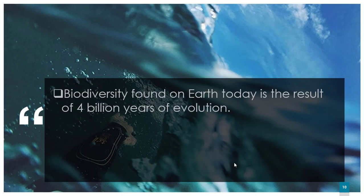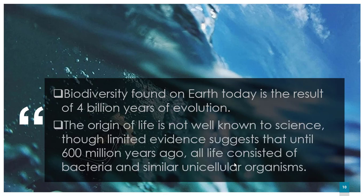If we talk about how biodiversity started, evolution began around 4 billion years ago. Before that, around 600 million years ago, only bacteria and unicellular organisms were present. Science says that after the Big Bang, bacteria and unicellular organisms started to appear, and then around 4 billion years ago evolution began, leading to the formation of many different organisms.